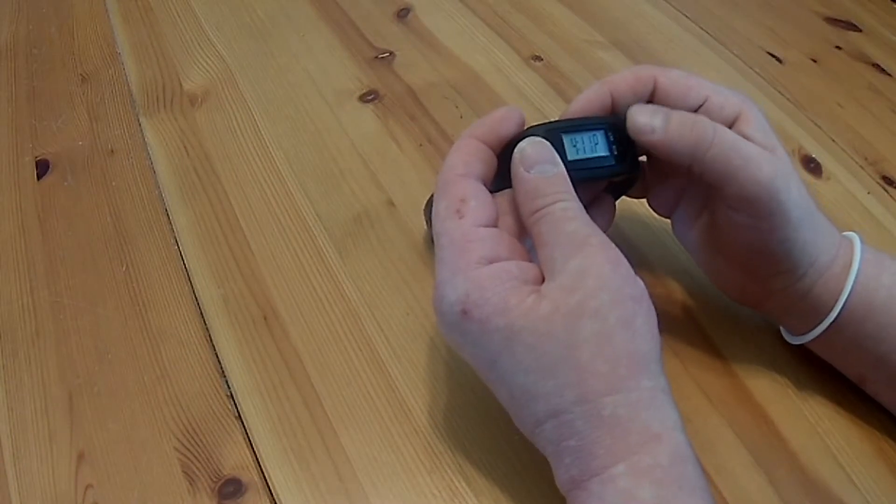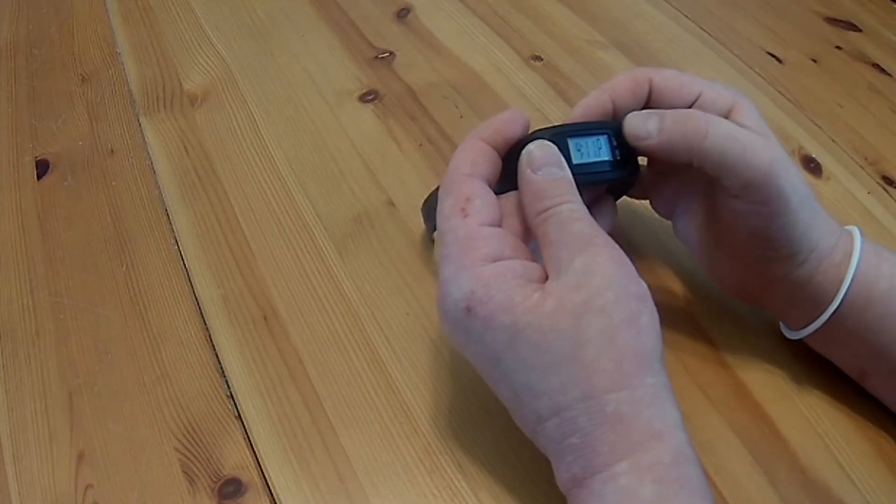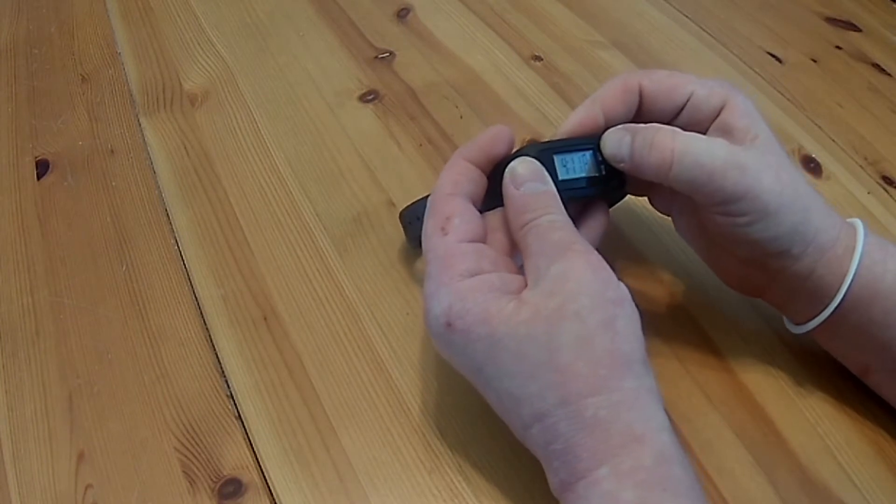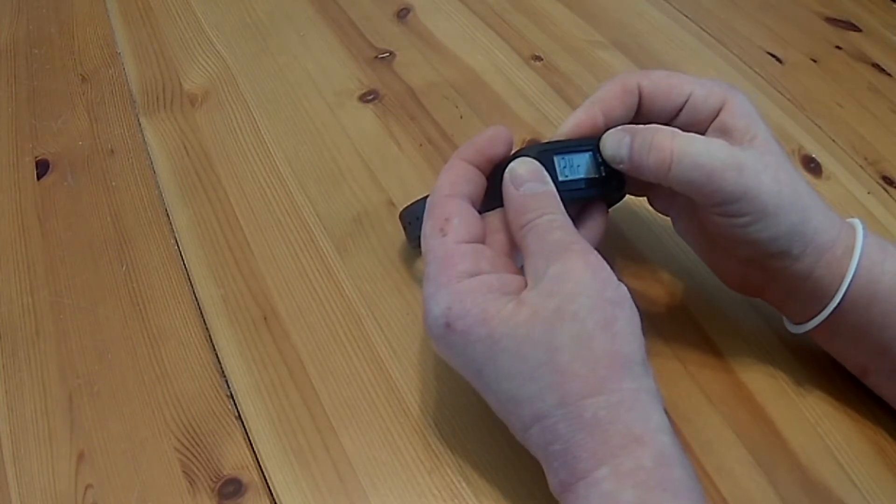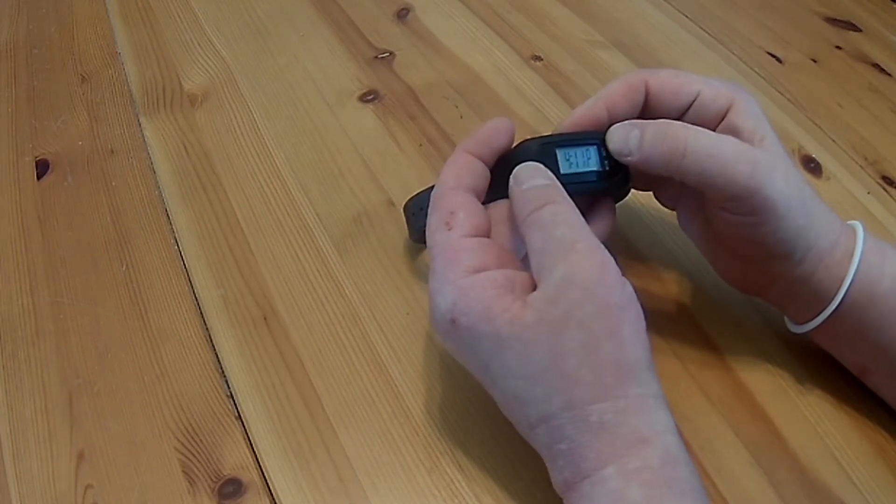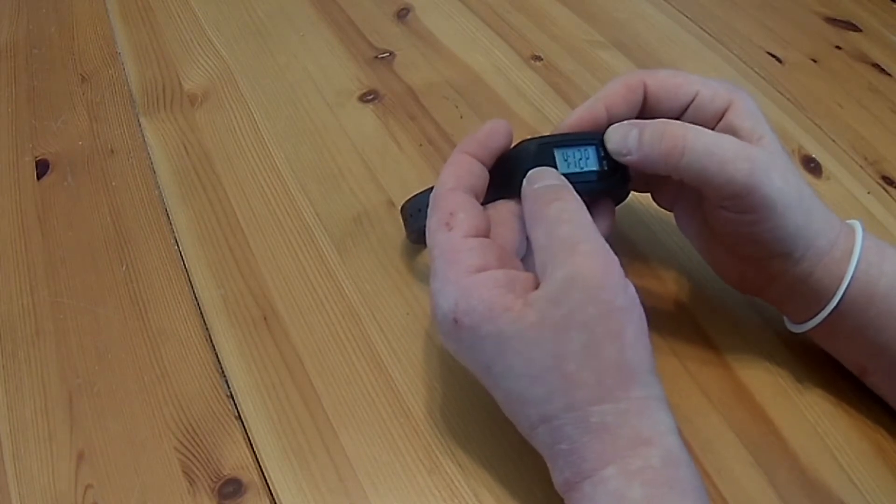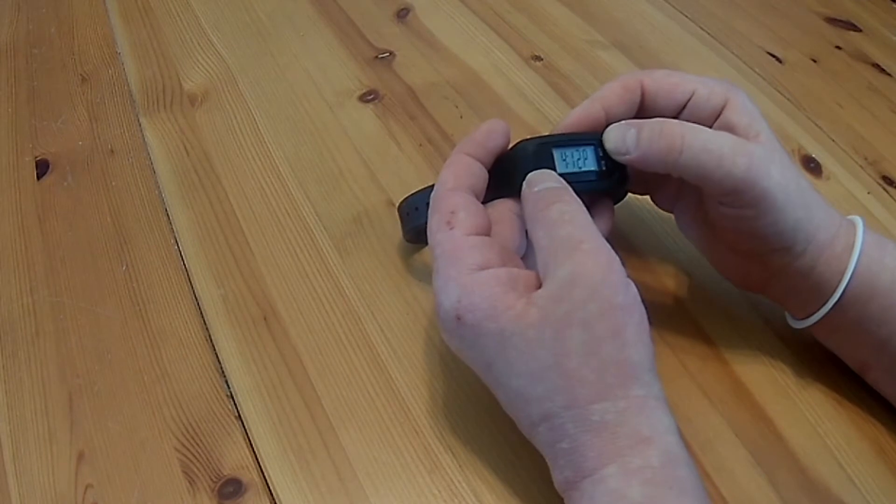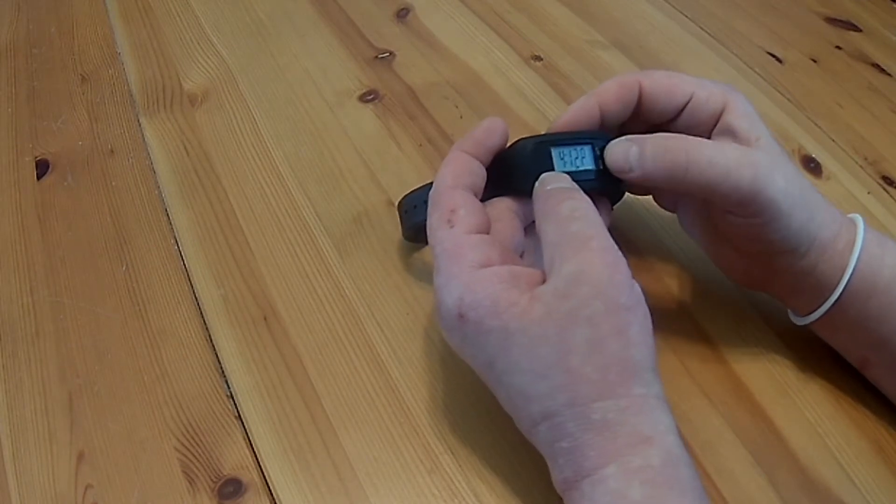Okay, it's pretty easy to set up. You have your Mode Button and your Set Button. To set the time, you just hold the Set Button in. You just cycle through 12 hours, hour, minute. The Mode Button will set it for you.